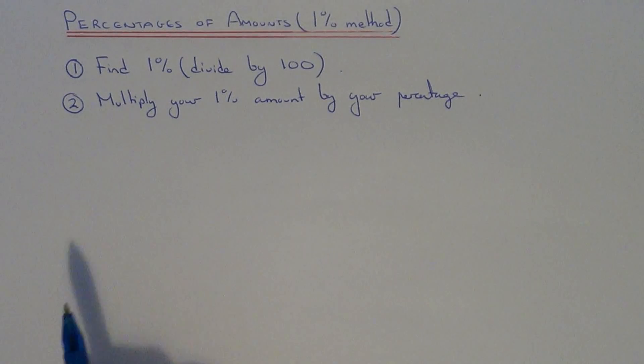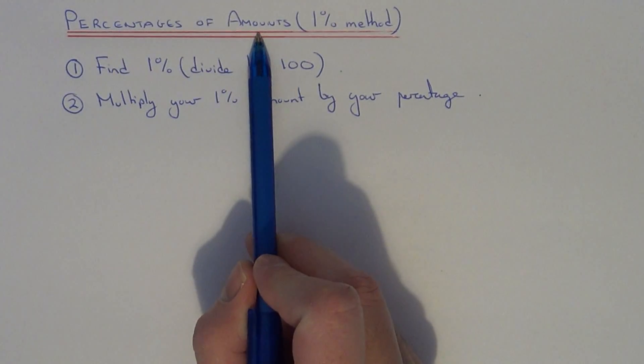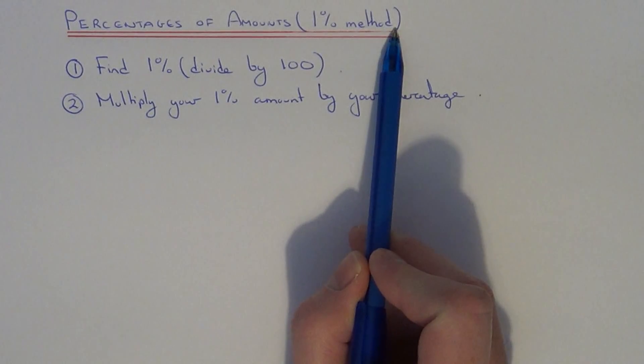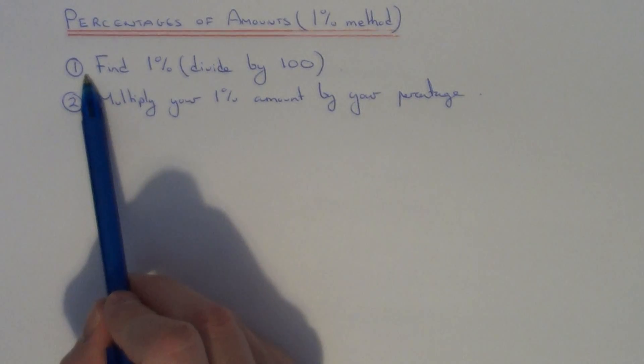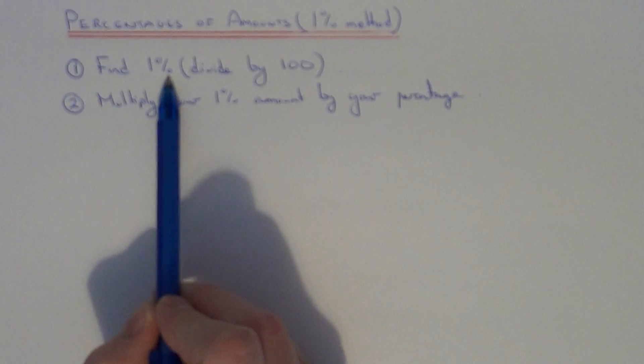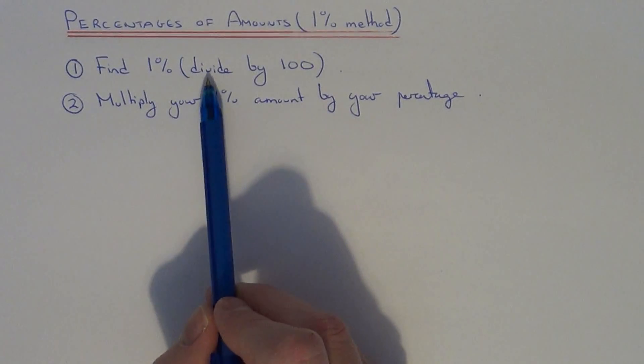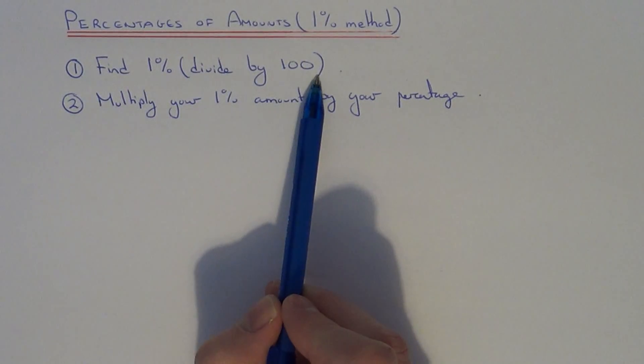Today I'm going to show you how to find a percentage of an amount using the 1% method. To do this, all you need to do on step 1 is work out 1% of your number. You can do this by dividing the amount by 100.